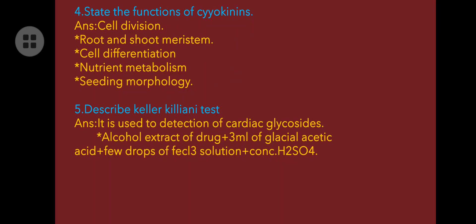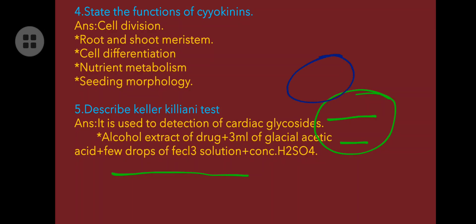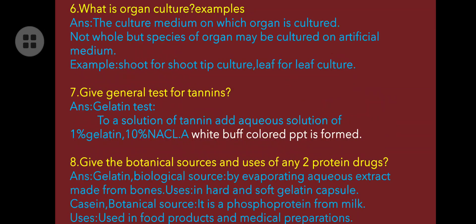Describe the Keller-Kiliani test used for detection of cardiac glycosides. Take an alcohol extract of the cardiac glycoside drug, add 3 ml of glacial acetic acid and a few drops of ferric chloride solution, then add sulfuric acid. You will find a violet or purple ring, which indicates the presence of cardiac glycosides.